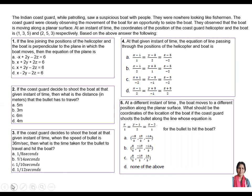The question is in front of you. There are five parts; let us read it very mindfully. The Indian Coast Guard, while patrolling, saw a suspicious boat with people who were nowhere looking like fishermen. The Coast Guard were closely observing the movements of the boat for an opportunity to seize it. They observed that the boat is moving along a planar surface. At an instant of time, the coordinates of the position of the Coast Guard helicopter and the boat are (1,3,5) and (2,5,3) respectively. Based on this, answer the following.